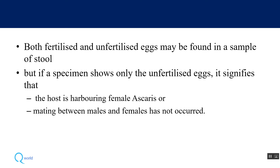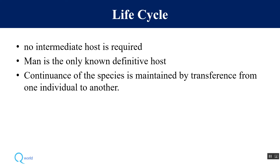If a stool sample shows only unfertilized eggs, it means only a female worm is present — no fertilization has occurred between male and female, or the host is infected with only a female worm. The life cycle has no intermediate host; there is only one host, which is man.